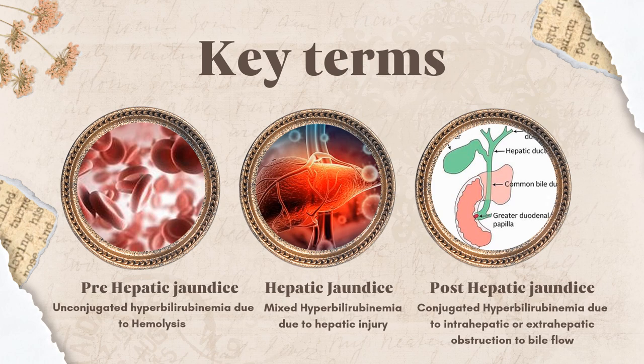Hepatic jaundice means mixed hyperbilirubinemia — both unconjugated and conjugated bilirubin levels can be elevated, most commonly due to hepatic injury. Post-hepatic jaundice means conjugated hyperbilirubinemia: bilirubin is conjugated in the liver, but because conjugated bilirubin travels through the bile channels into the intestines, obstruction — either intra-hepatic or extra-hepatic — causes it to accumulate. These three distinctions must be clear in your mind.